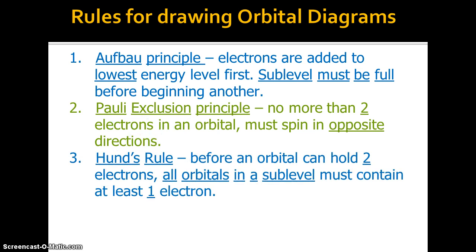Third rule, Hund's rule. Before an orbital can hold two electrons, all orbitals in a sublevel must contain at least one electron.